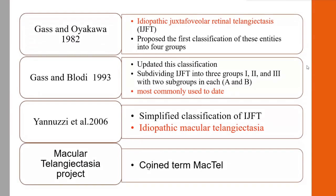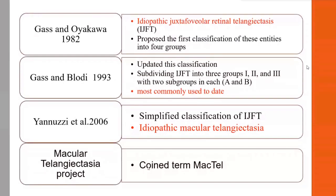In the history, in 1982, Gass and Okawa first described this entity as idiopathic juxtafoveolar retinal telangiectasia (IJFT) and proposed the first classification into four groups. In 1993, Gass and Blodi updated this classification and subdivided IJFT into three groups with two subgroups each (A and B), which remains the most commonly used classification. In 2006, Yanuzzi et al. simplified this classification and coined the term idiopathic macular telangiectasia, and the Macular Telangiectasia Project coined the term MacTel.